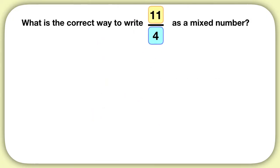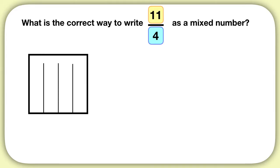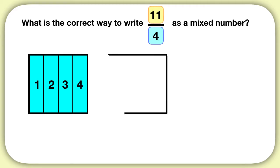So let's say we're asked to write 11 fourths as a mixed number. We'll start by drawing 11 fourths. I do this by drawing one whole, breaking it into fourths, and shading 1, 2, 3, 4 fourths. Then I draw another whole,